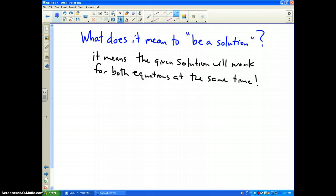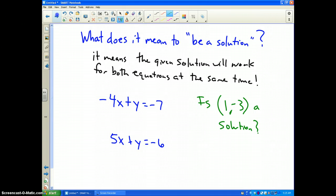I am going to go back to our original problem. Negative 4x plus y equals negative 7, and 5x plus y equals negative 6. And the question that I am going to pose is: is the point or coordinate (1, negative 3) a solution to our system of equations?